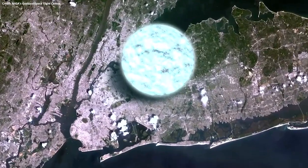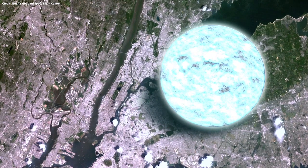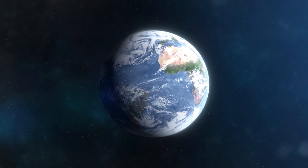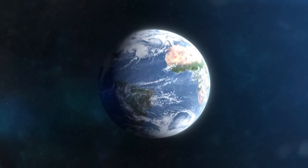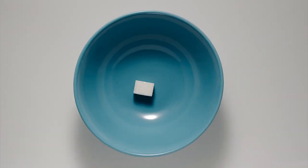Neutron stars pack roughly the mass of our Sun into a region the size of Manhattan. At these incredibly high densities, you could tamp all of humanity into a volume the size of a sugar cube.